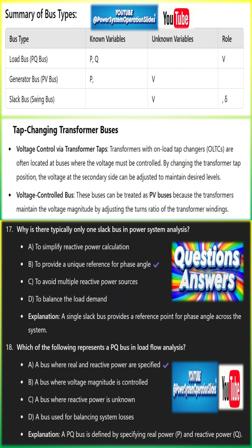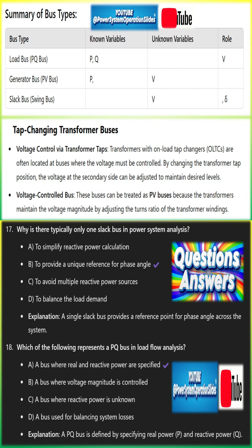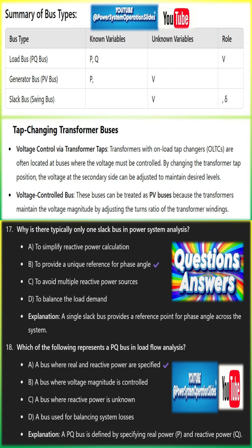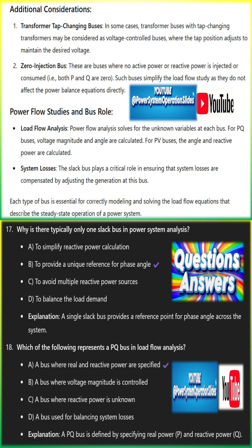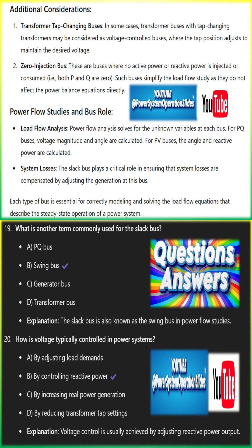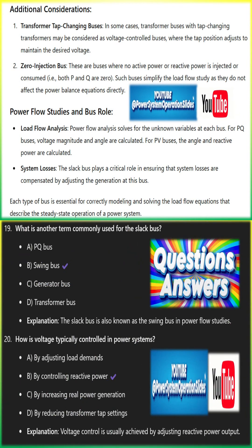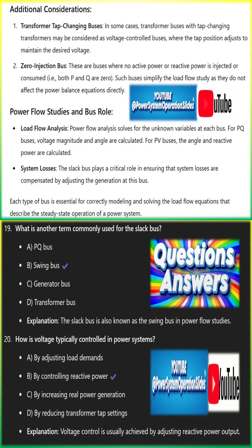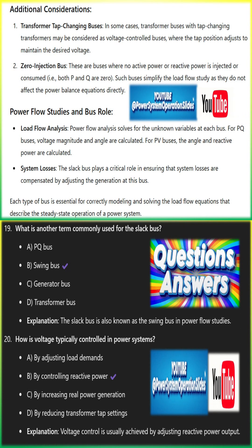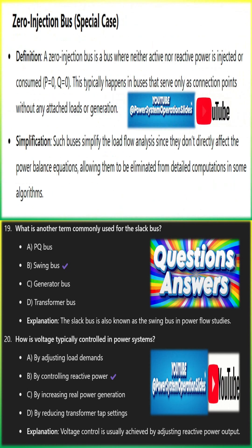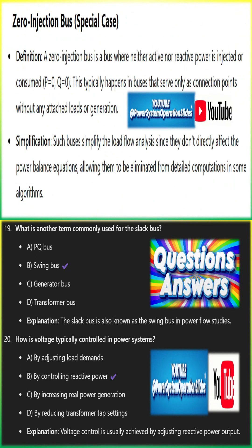Generator bus, PV bus or voltage-controlled bus: a generator bus is one where real power P and voltage magnitude V are specified. The system controls the reactive power generation to maintain a constant voltage at this bus. Variables known: real power P and voltage magnitude V. Variables unknown: